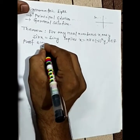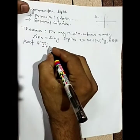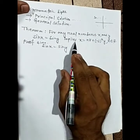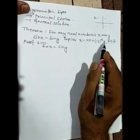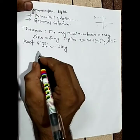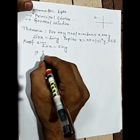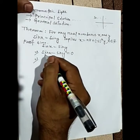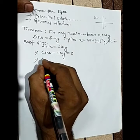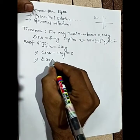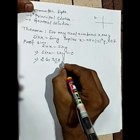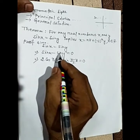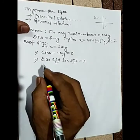Now we prove the theorem. Given: sin x = sin y. We must prove x = nπ + (-1)^n y, where n belongs to Z. Bring sin y to the left-hand side: sin x − sin y = 0. Now use the formula sin A − sin B = 2 cos((A+B)/2) sin((A−B)/2) = 0.